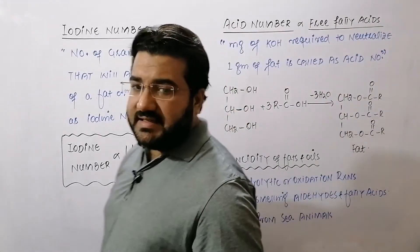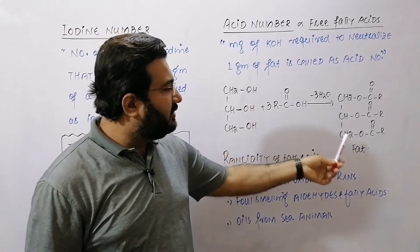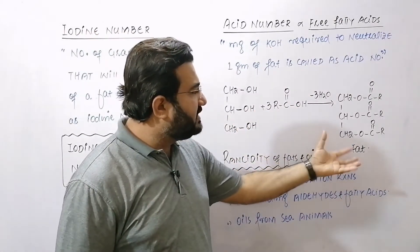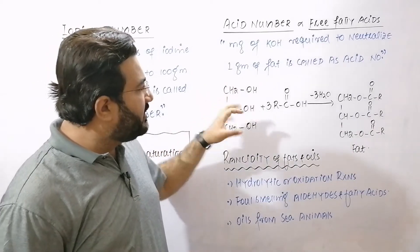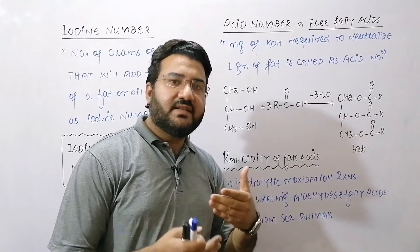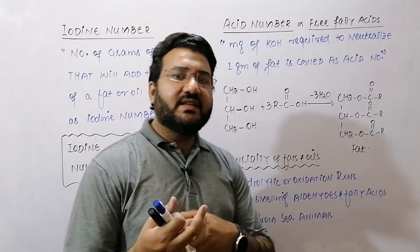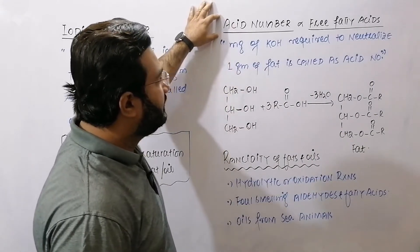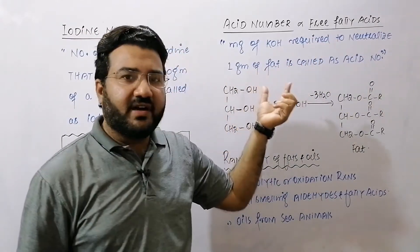The next term is acid number. When glycerol reacts with fatty acid, after the loss of a water molecule, it results in the formation of fat. This is an esterification reaction, and fat is basically a triester of glycerol. Keep in mind that when this esterification reaction takes place, not all molecules of the fatty acid are esterified — some fatty acids remain free in the fat or oil. To check how many fatty acid molecules are in free form in the fat or oil, we use the term acid number.